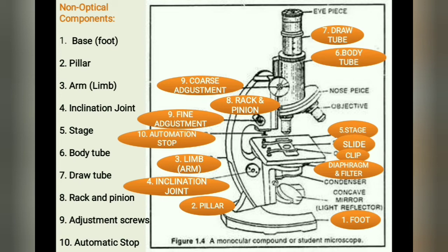The next part is the adjustment screws. There are two pairs of screws for moving the body tube in relation to the stage — larger for coarse adjustment and smaller for fine adjustment. In fine adjustment, the body tube or stage moves for extremely short distances. In coarse adjustment, the body tube or stage can move up and down. The coarse adjustment is meant for bringing the objective lens to a proper distance from the object so as to form an image at the ocular end. Fine adjustment is required to obtain a sharp image.